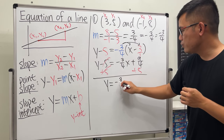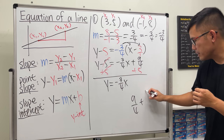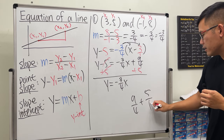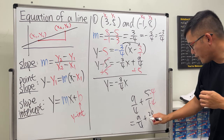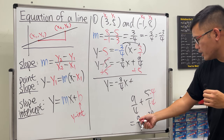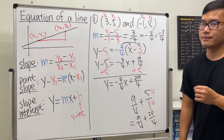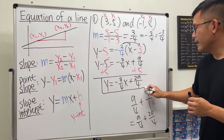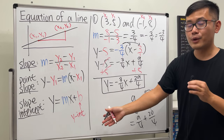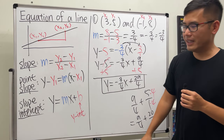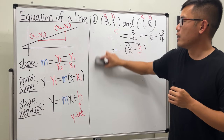Add 5 to both sides. Since 5 = 20/4, we get 9/4 + 20/4 = 29/4. So the final answer in slope-intercept form is y = −(3/4)x + 29/4.